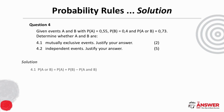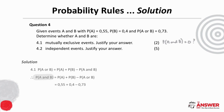In order to prove events are mutually exclusive, we have to show that the probability of A and B equals zero. We use the addition rule equation and make P(A and B) the subject. By substituting the values from the information given, we see that the probability of A and B is 0.22 and not zero, which means we can conclude that these two events are not mutually exclusive.